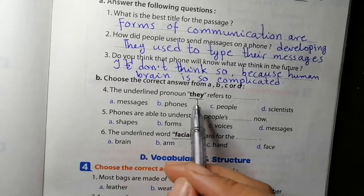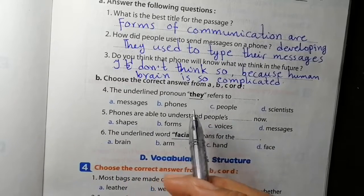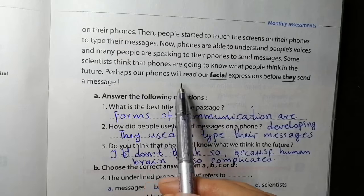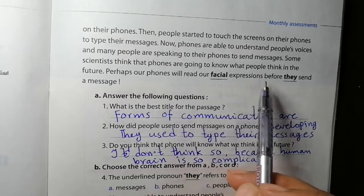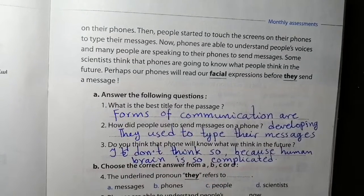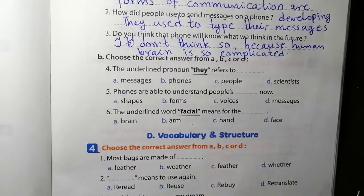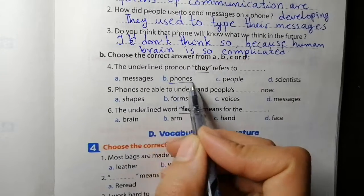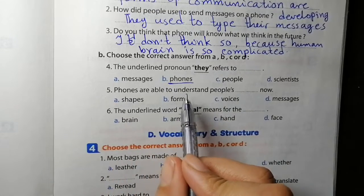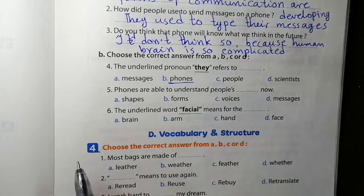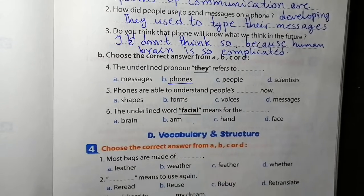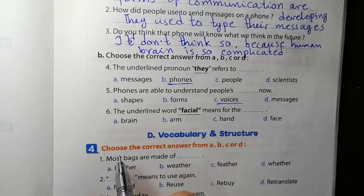The underlined word 'they' refers to - Perhaps our phones will read our facial expressions before they send a message. So 'they' refers to phones. Phones are able to understand people's voices.